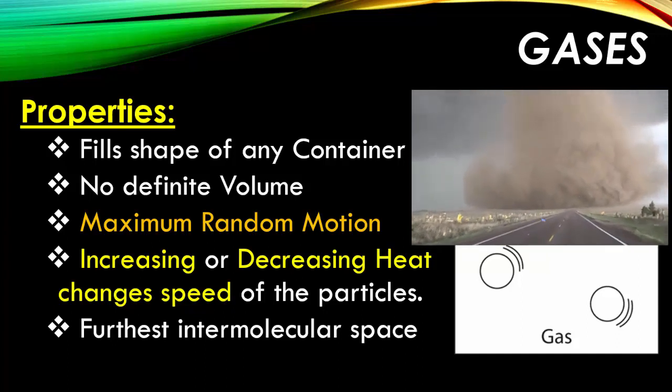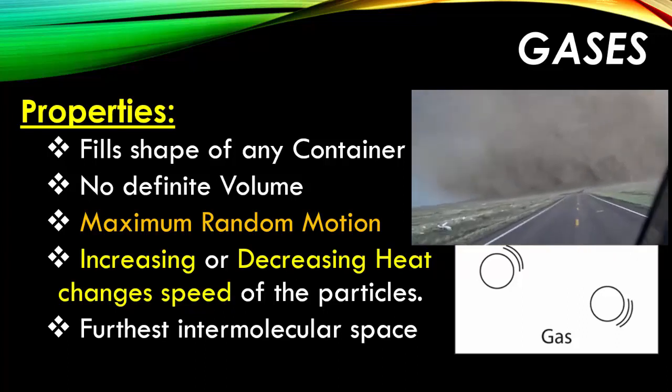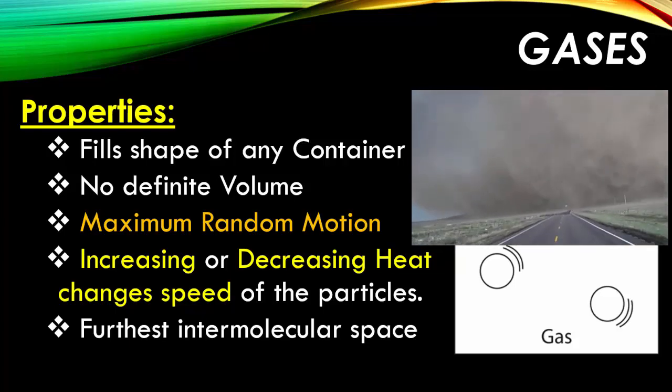Gases also have the maximum random motion. This means that they are spinning, vibrating, and bouncing off of all matter that they encounter. Like liquids, you can increase or decrease the speed of the particles by changing the amount of heat that the sample is given. And unlike all the other phases of matter, they have the furthest intermolecular space between the particles.